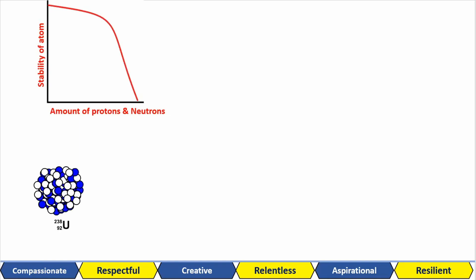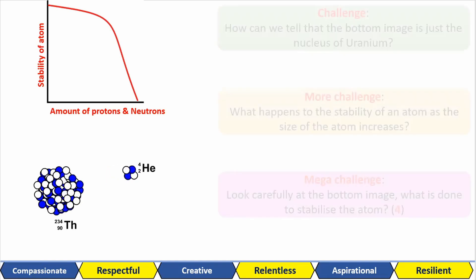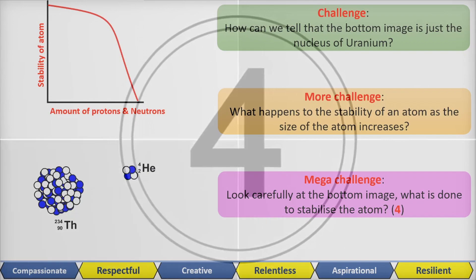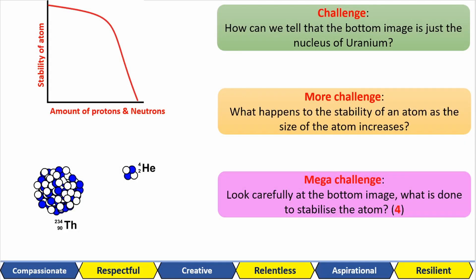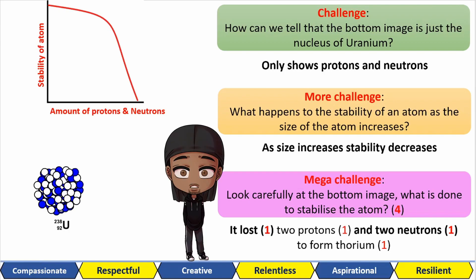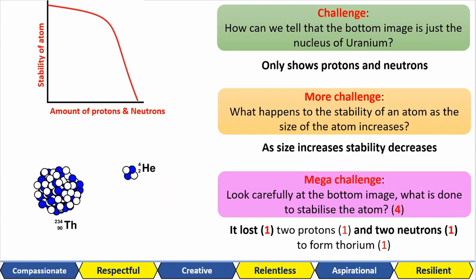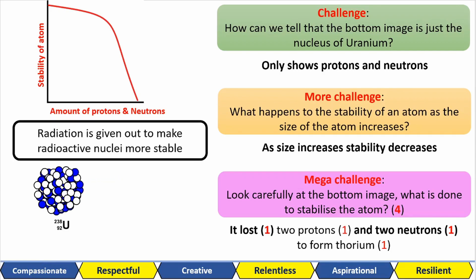Here I have a graph showing the relationship between the size of the nucleus and how stable the atom is. The bottom GIF shows what a nucleus could do to make itself more stable. Here are some challenge questions for you to do. It's clear the bottom image is a nucleus because we can only see protons and neutrons and no electrons. Some of you are probably thinking it's because we see the symbol for uranium, but that could be a uranium atom. The main thing is that we only see protons and neutrons in the image. On the graph, we see that as the size of the atom increases, the stability of the atom decreases.